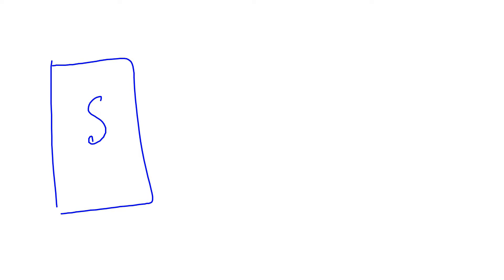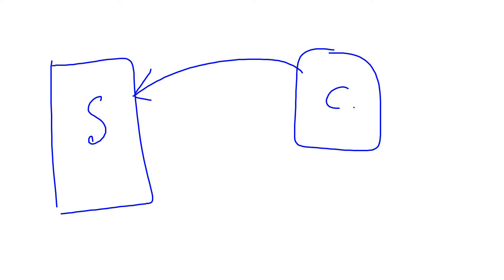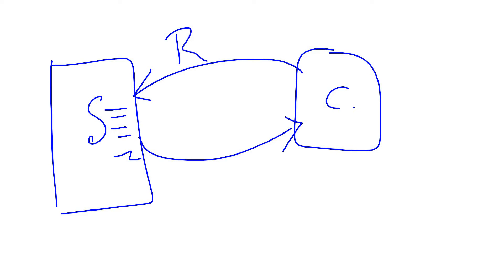Coming to distributed applications like a server-client model — this is a web server and this one is a client. When the client wants to get some data from the server, it will put a request to the server. The server takes that request, processes it, and responds back to the client with a response.